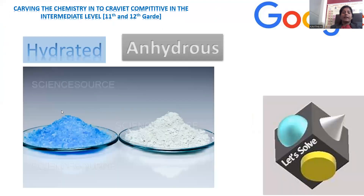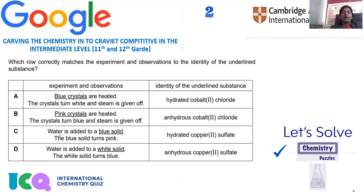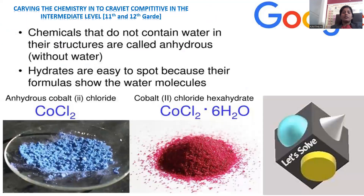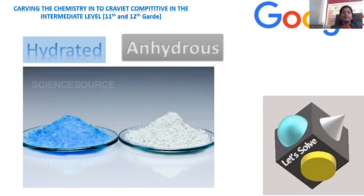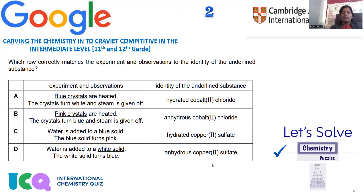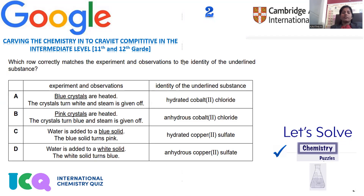In the case of copper sulfate: hydrated copper sulfate is blue and anhydrous copper sulfate is white. Option C states the hydrated one is blue — that part is correct — but other details are wrong, so option C is wrong. In option D: water is added to white solid and the white solid turns blue. White solid is anhydrous copper sulfate; when water is added it turns blue because the hydrated form is blue. This is exactly correct.